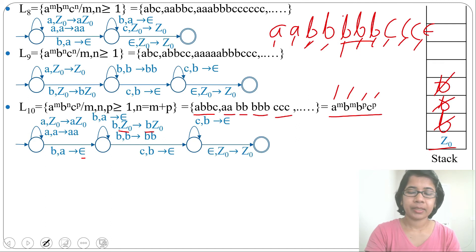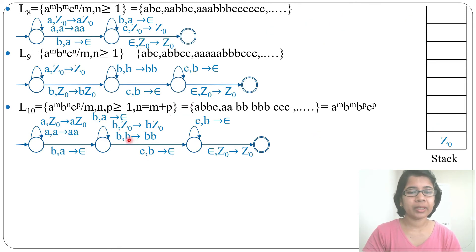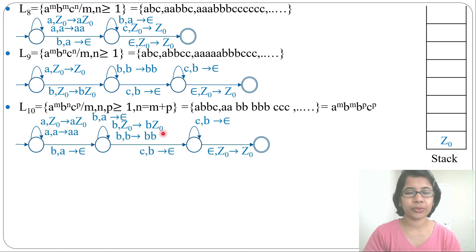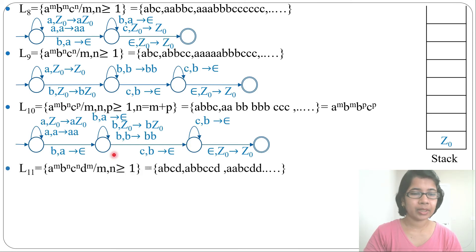This is the PDA for that language. You can optionally create another state for clarity, but I kept it in one state to avoid confusion. Whenever we see a we pop, and whenever we see Z0 we push — that's why I did it in one state. You can also do it in two states.